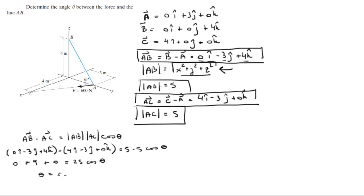So theta is equal to the cosine inverse of 9 over 25, so theta is equal to 68.9 degrees. Final answer.